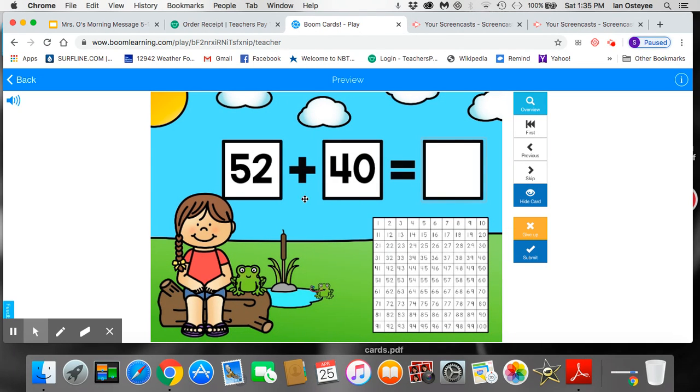This one is 52 plus 40. So I'm going to find the two-digit number, 52, that I can't count by 10. And I'm going to count on 40. So here is 52. Now I'm going to count by 10 to 40 as I hop down on the 100 chart to make a bigger number.